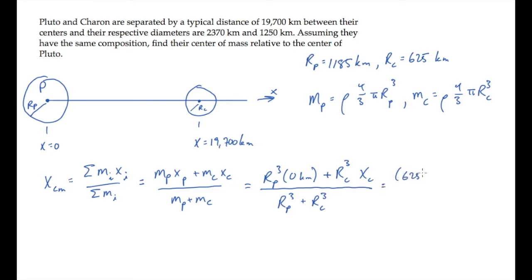Now we can substitute the known values and calculate, finding that the center of mass is located a distance 2520 kilometers from the center of Pluto, which is about right here.